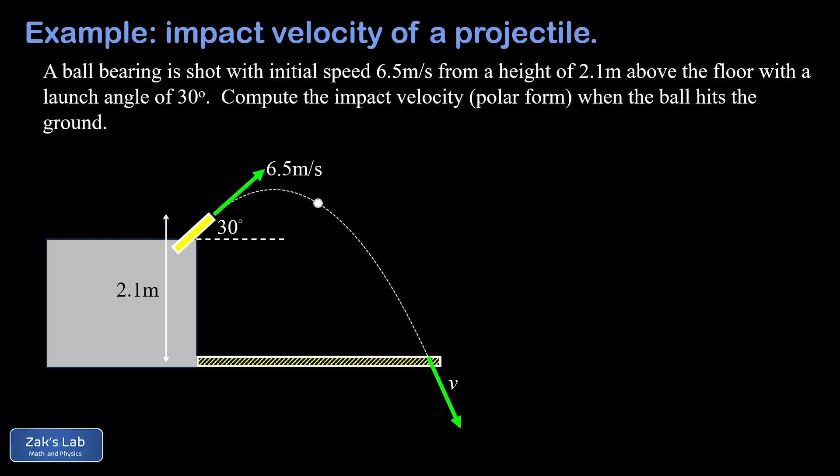To start things out, I'm going to break the initial velocity into its velocity components. There's the horizontal and vertical initial velocity components. The horizontal one we'll call v naught x and the vertical one we'll call v naught y.